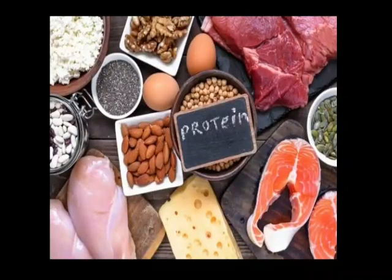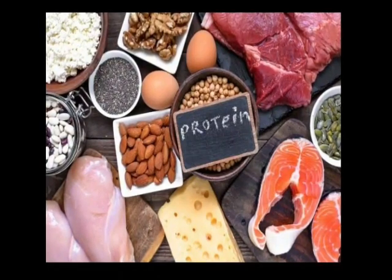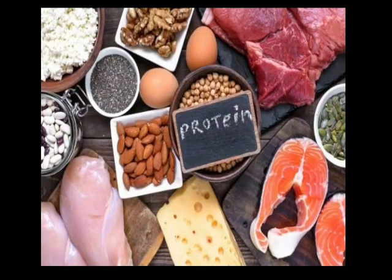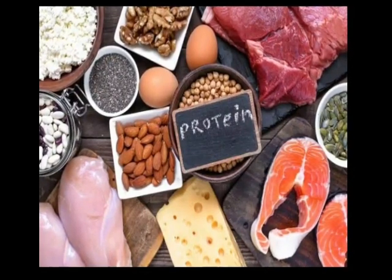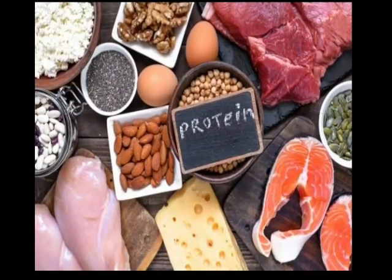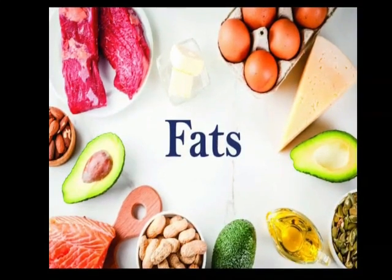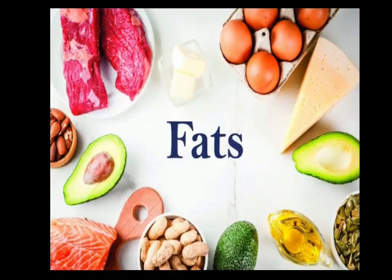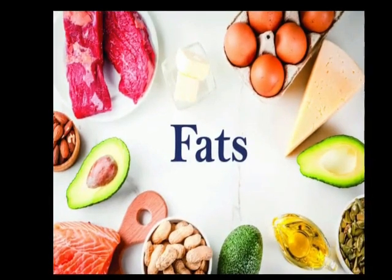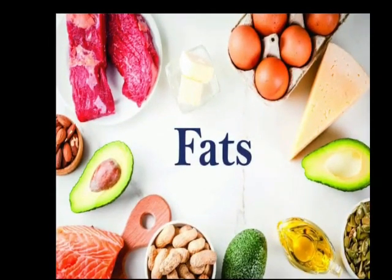Your brain also needs amino acids to help regulate thought and feeling. Since protein contains amino acids, it is important to get enough in your diet. Protein is found in meat, fish, eggs, nuts, seeds, cheese, and legumes. Fatty acids such as omega-3 and omega-6 are essential for brain function and can be found in nuts, seeds, oily fish, poultry, avocados, dairy products, and eggs.